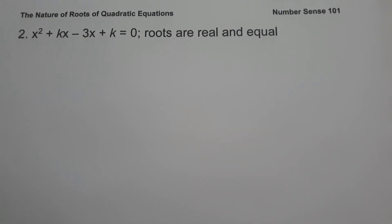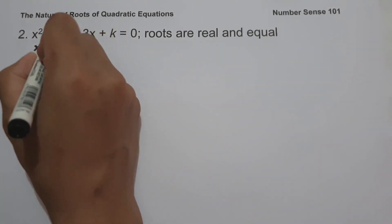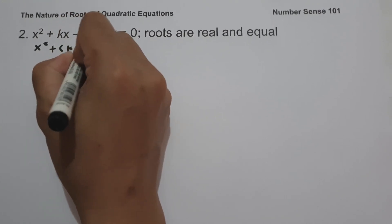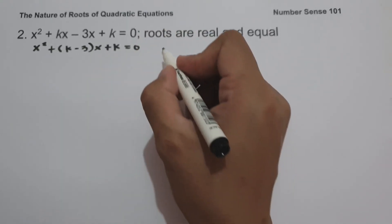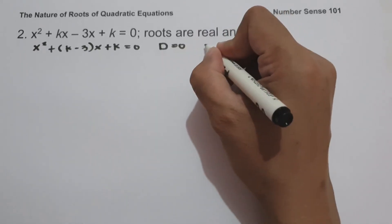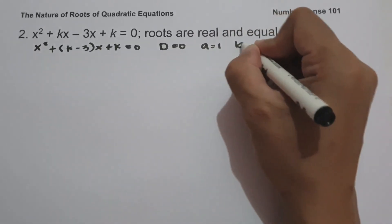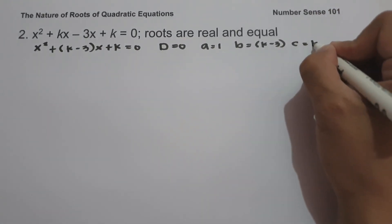On our last example, we have x squared plus kx minus 3x plus k equals 0, and the roots are real and equal. So the first thing that we're going to do is to write the given equation as x squared plus quantity k minus 3 times x plus k equals 0. Since the roots are real and equal, that means the discriminant is equal to 0. So the value of a is 1, b is k minus 3, and c is k.